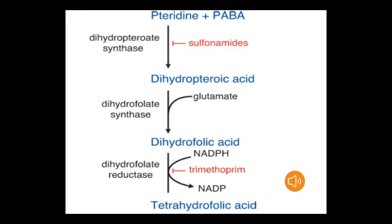In the bacterial folic acid pathway, pteridine and para-aminobenzoic acid combine to form dihydropteroic acid by dihydropteroate synthase. This conjugates with glutamic acid to form dihydrofolic acid by dihydrofolate synthase. Dihydrofolic acid is then converted to tetrahydrofolic acid by dihydrofolate reductase. Tetrahydrofolic acid is finally utilized for the synthesis of bacterial DNA.